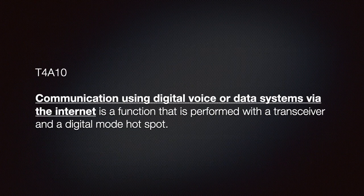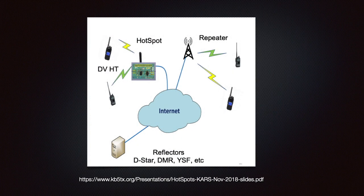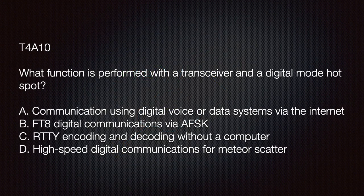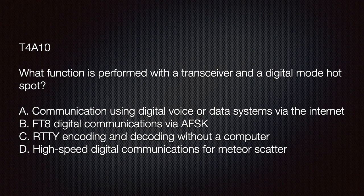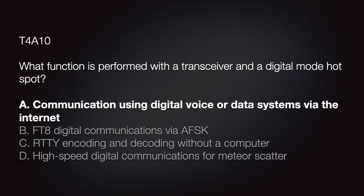We should know that communicating using digital voice or data systems via the internet is a function performed with a transceiver in a digital mode hotspot. Amateur digital mobile radios have been around since 2010 but were not approved for amateur use until 2014. Hotspots are devices that allow DMR transmissions to travel over the internet to other locations. The test question is: what function is performed with a transceiver in a digital mode hotspot? The correct answer is A — communications using digital voice and data systems via the internet.